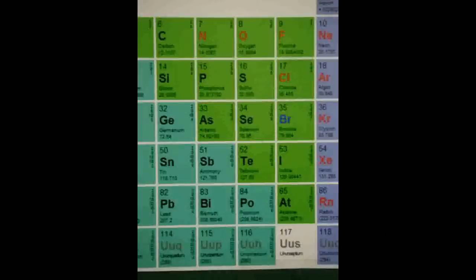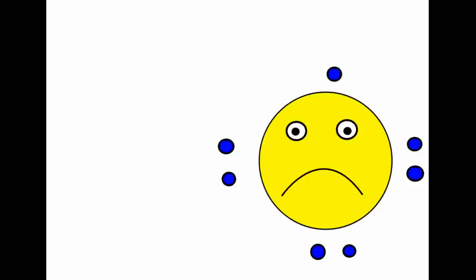The elements on the right, groups 5, 6 and 7, prefer to gain extra electrons. When a neutral atom gains an electron in this way, it forms a negatively charged ion.